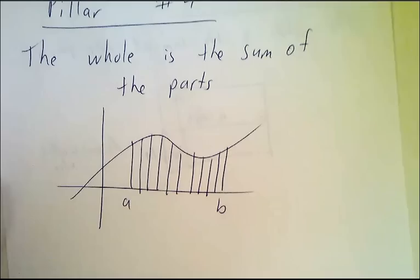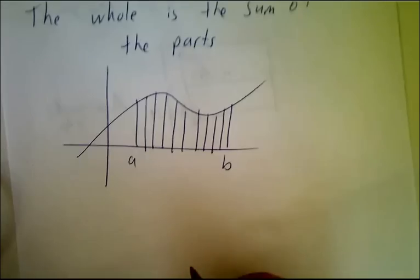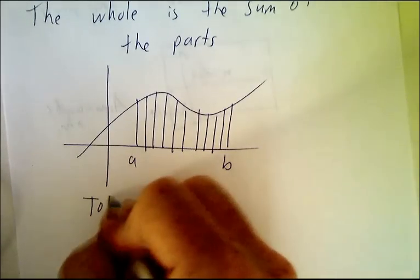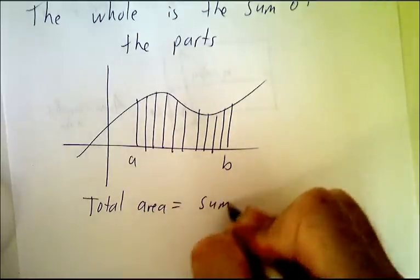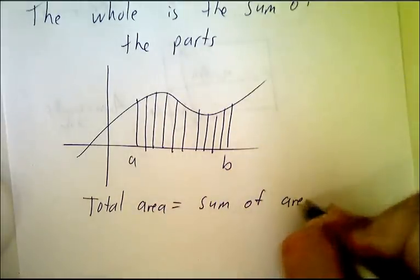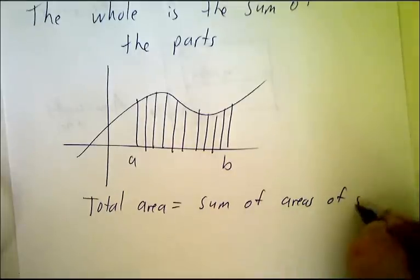So what we've just done is we've said we have some region and we have the total area equals the sum of the areas of the different little strips.